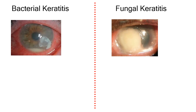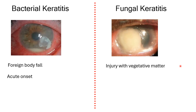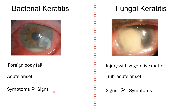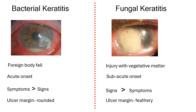Bacterial keratitis: typically caused by foreign body injury, acute onset, immediate and severe symptoms. Symptoms are more than signs — a small ulcer can cause severe pain. Margins are rounded. In fungal keratitis: caused by vegetative matter injury, subacute onset, patient presents one to two weeks after injury. Signs are more than symptoms — the ulcer may cover half or the entire cornea but the patient is not in severe pain. Margins are feathery.